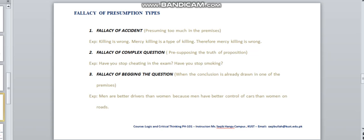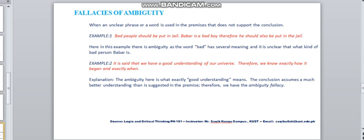Now, coming to the third type of fallacy, that is the Fallacy of Ambiguity. The Fallacy of Ambiguity always occurs when there is a word or a phrase used in premises which conveys double meaning or has double sense. Like, bad people should be put in jail. Baba is a bad boy, therefore, he should also be put in jail. Here, what bad people means is ambiguous.